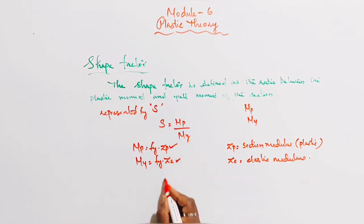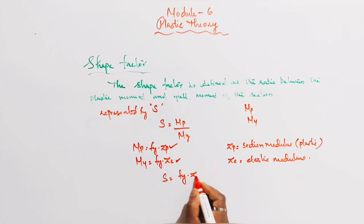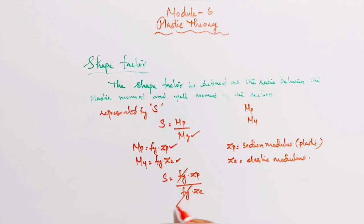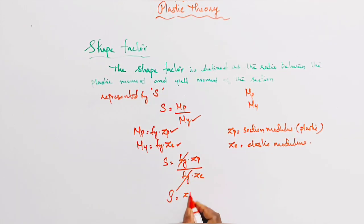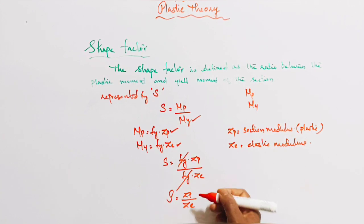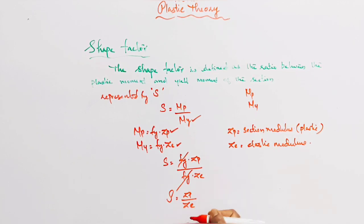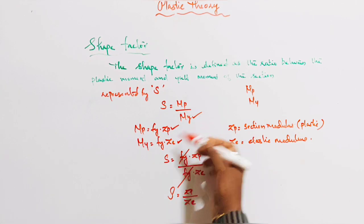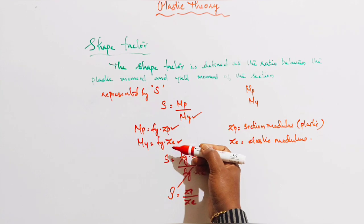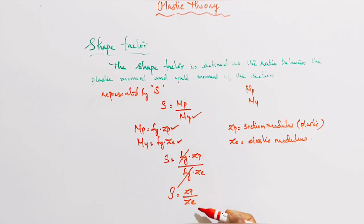S is equal to MP by MY. We know that MP equals Fy into ZP, and MY equals Fy into ZE. Since Fy cancels out, shape factor S is equal to ZP by ZE — plastic modulus divided by elastic modulus.